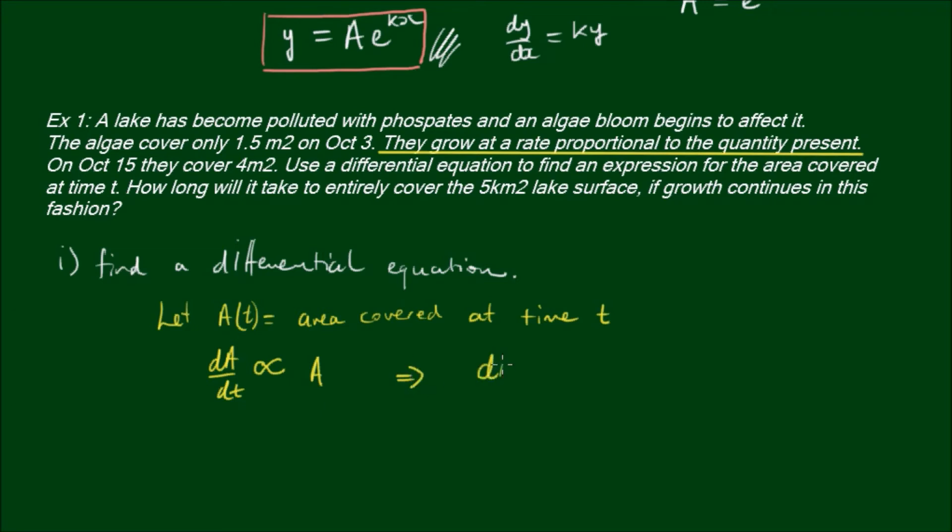This then translates to dA/dt, the rate of change of area, is equal to some factor, some growth factor times the area. So this is looking familiar, we've got a differential equation of the form dy/dx equals ky, but in this case we've replaced the y with A and we've replaced the dx with dt because it's a function of time rather than a spatial coordinate.